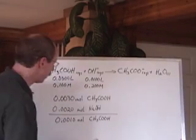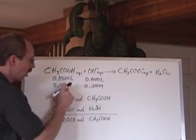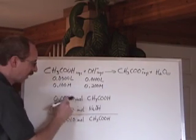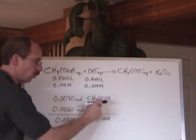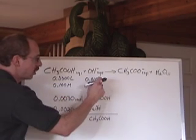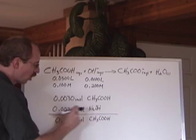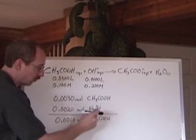Okay, so I jumped ahead a little bit here. Multiplying the concentration times the volume of the acetic acid got me 0.0030 moles of acetic acid. Concentration times the volume of the base got me 0.0020 moles of the base.